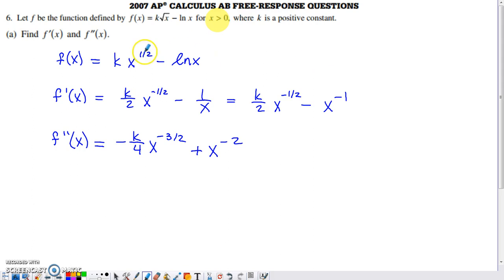Part A asks us to do two things: find f prime of x, find f double prime of x. So when you take f prime of x, this is a little bit weird to do, but it's something that you should be really familiar with. Think about if k were a four. If k were a four, and you were taking the derivative of 4x to the one-half, you'd multiply that four by one-half, subtract one from the exponent, and you'd be on your way. We take the exact same approach. We just don't get a nice answer.